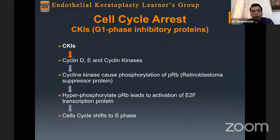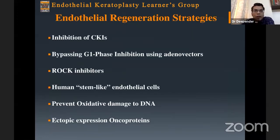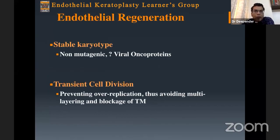To summarize, endothelial regeneration strategies include inhibiting CKIs, or bypassing the process using adenoviral vectors to transfer viral oncoproteins and kick-start mitosis. ROCK inhibitors have been described as very effective in this regard. Stem cell-like properties have also been identified in peripheral endothelial cells near the trabecular meshwork, which may be the holy grail for endothelial regeneration. Any method used must be non-mutagenic for long-term safety, and cells should divide transiently then stop to avoid multi-layering or blockage of the trabecular meshwork. With that, I will wrap up this presentation.